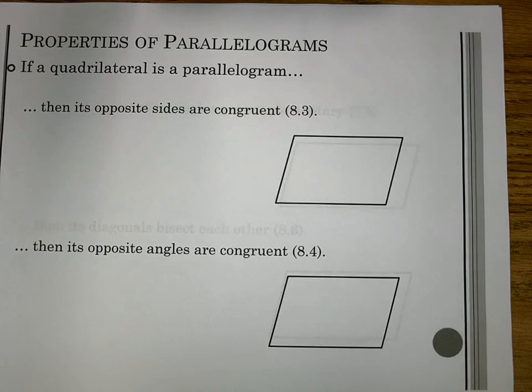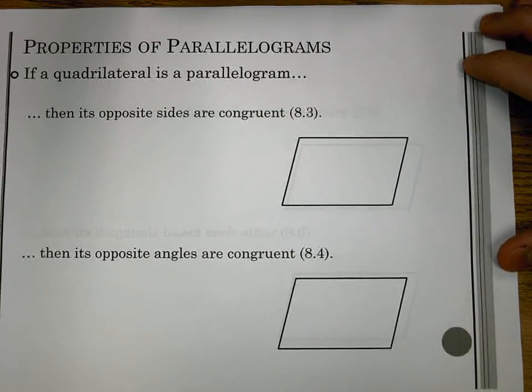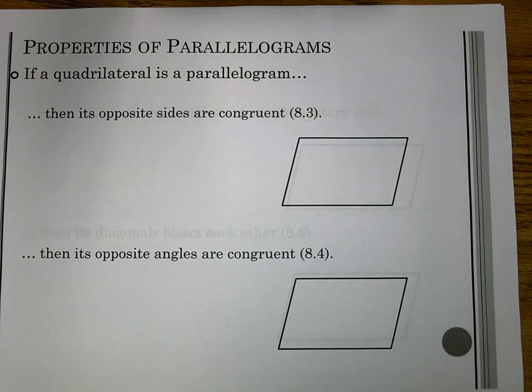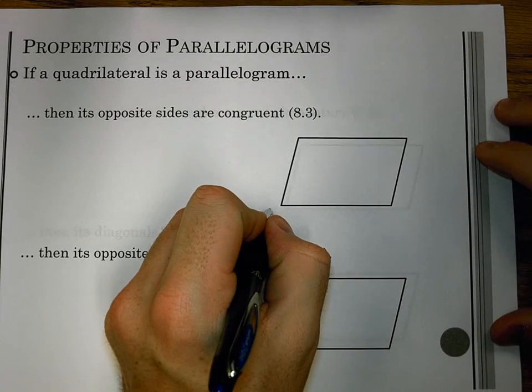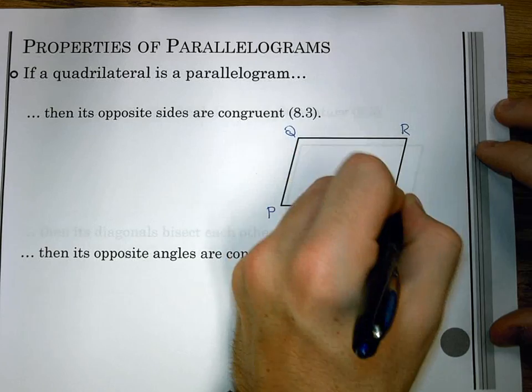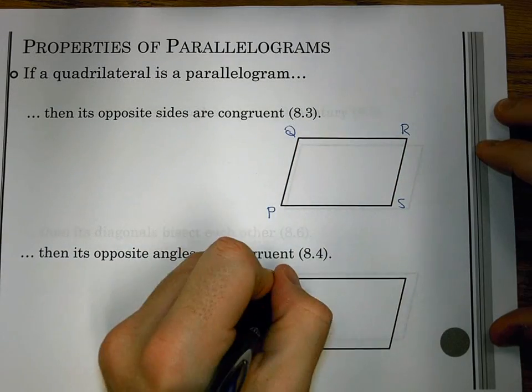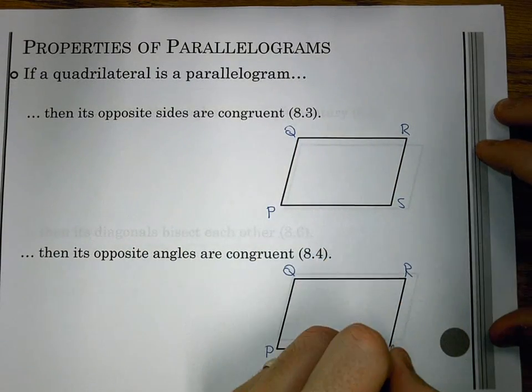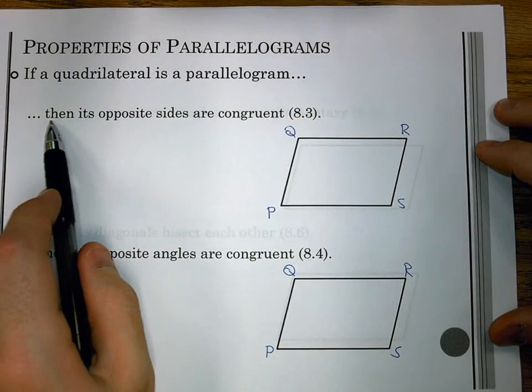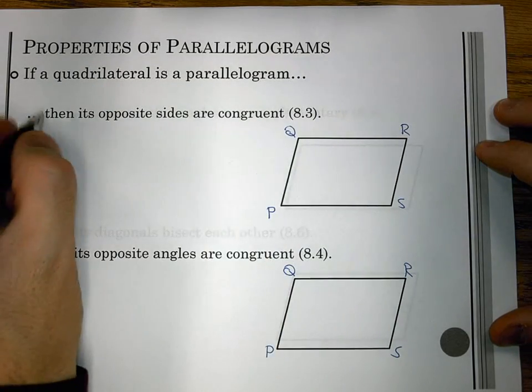So let's start with our properties. These are actually theorems in our book. The number is the one following each theorem. And they all start off the same way: if a quadrilateral is a parallelogram. So we're going to label each one as PQRS. So in our first one, if a quadrilateral is a parallelogram, then its opposite sides are congruent.